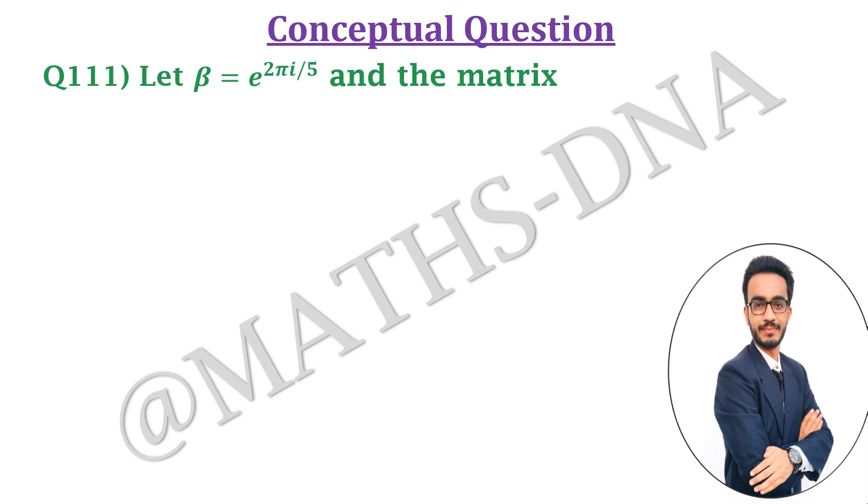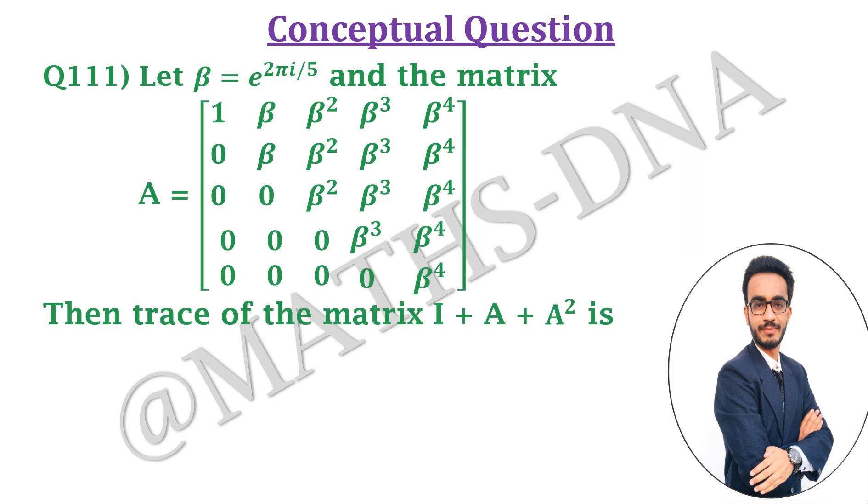In this video, we are going to discuss a question of linear algebra and the question is that β = e^(2πi/5) and the matrix A is equal to 5×5 matrix with entries